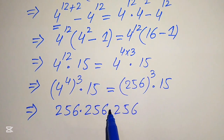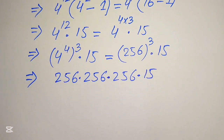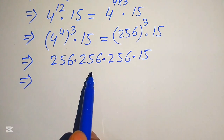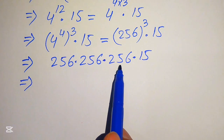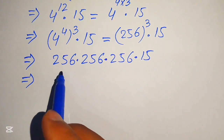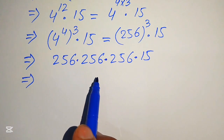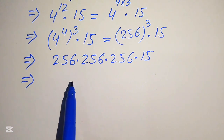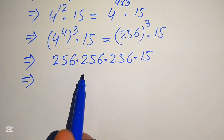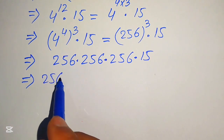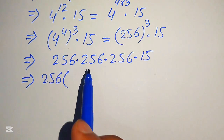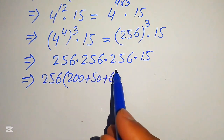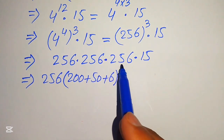Now we multiply all these numbers. First, we make pairs to simplify. Since these are large numbers and the calculator is not allowed, I'll give you a smart way to multiply bigger numbers. We break 256 as 200 plus 50 plus 6, and we break 15 as 10 plus 5.